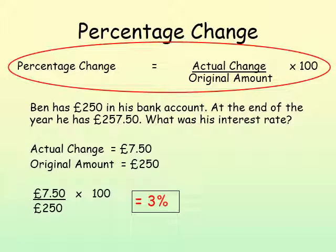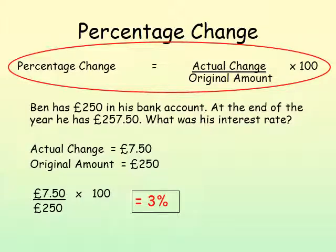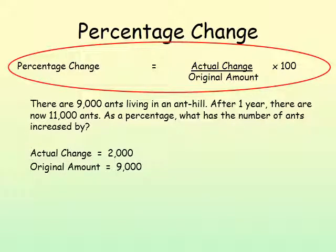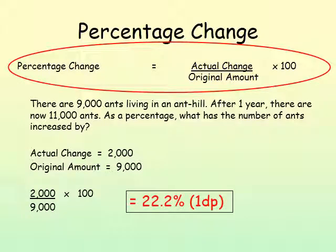You are not allowed to use a calculator in the SATs or the 11 plus. In this next example, there are 9,000 ants living in an ant hill; after one year this number has gone up to 11,000. We need to show the increase as a percentage. We work out the actual change: 11,000 take away 9,000, which is 2,000. The original amount was 9,000. Putting that into the formula, the answer is 22.2% to 1 decimal place. You will be told to what level of accuracy to calculate.